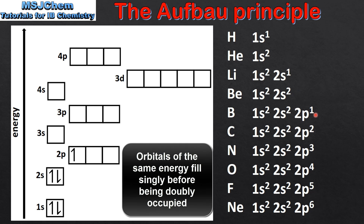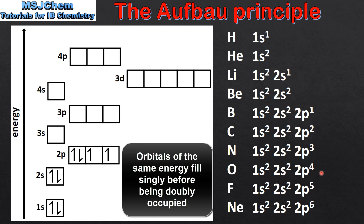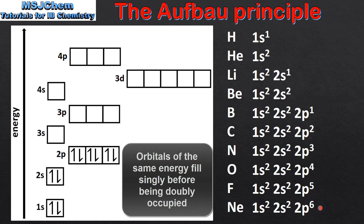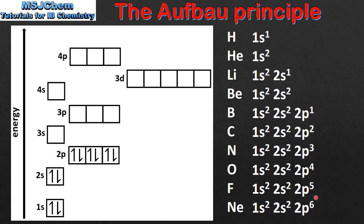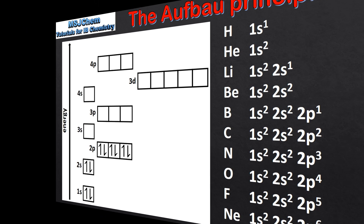Next we'll start filling the 2p sublevel starting with boron. Next we have carbon, then nitrogen, then oxygen, then fluorine and then neon, which takes us up to 2p6, filling the 2p sublevel.